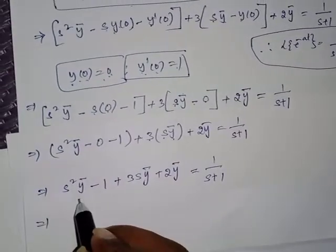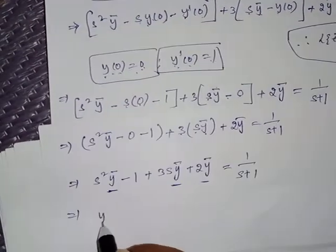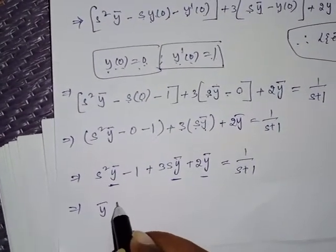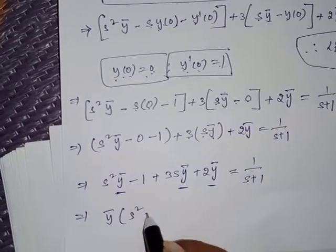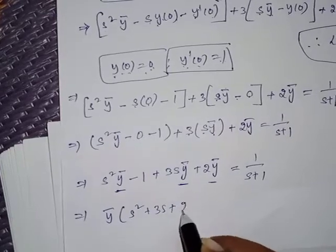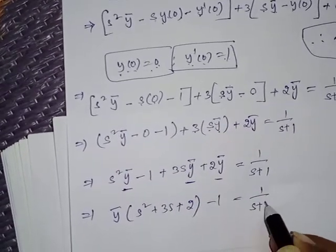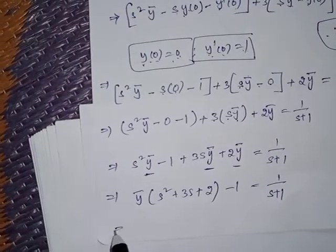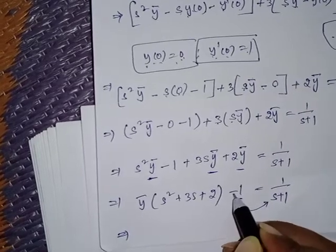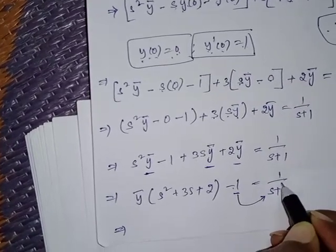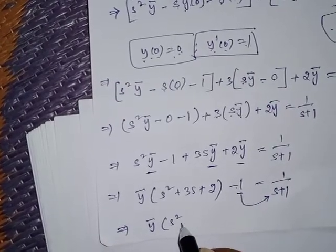Observe that ȳ is common throughout. Taking ȳ as common, the remaining terms give ȳ(s² + 3s + 2) - 1 = 1/(s+1). Transferring -1 to the right-hand side gives ȳ(s² + 3s + 2) = 1/(s+1) + 1.